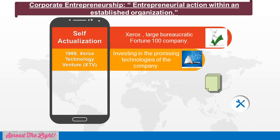Most people think of Xerox as a large bureaucratic Fortune 100 company. Although in part this may be true of the $23 billion company, Xerox has done something unique in trying to ensure that its creative employees do not leave — like Steve Jobs, who left to form Apple Computer Inc. In 1989, Xerox set up Xerox Technology Ventures, abbreviated as XTV, for the purpose of generating profits by investing in promising technologies of the company.